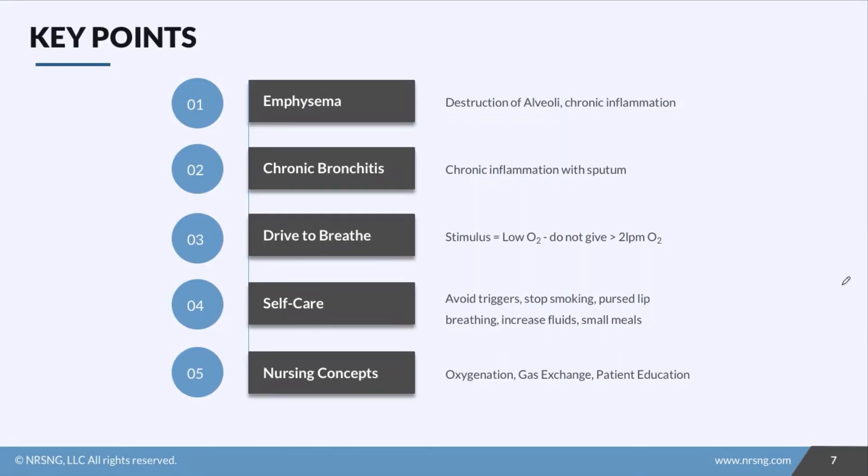So remember that COPD is chronic obstruction of the airways caused by either emphysema or chronic bronchitis or a combination of both. Emphysema is destruction of the alveoli due to chronic inflammation. Chronic bronchitis is inflammation and excessive sputum production that's going to obstruct airways and impair gas exchange. COPD patients often live with a low O2 and a high CO2 level. Their bodies accommodate to this and their drive to breathe shifts. Instead of a high CO2 stimulus they now have a low O2 stimulus. So we have to be cautious giving supplemental oxygen. We need to encourage patients to use pursed lip breathing, stop smoking, identify triggers, and avoid them. They also need to increase their fluid intake if they can and eat smaller more frequent meals to make sure they get the nutrition they need. Our main nursing priorities for these patients are oxygenation, gas exchange, and patient education.